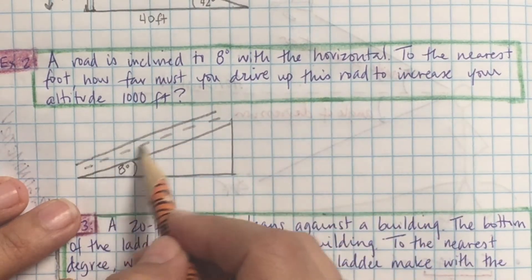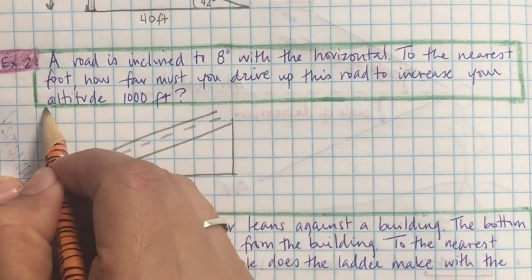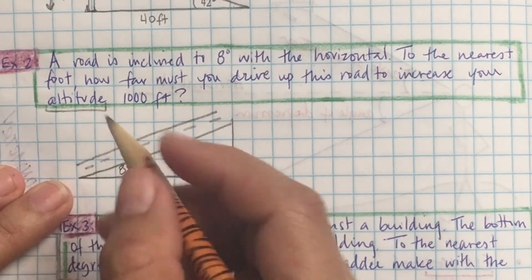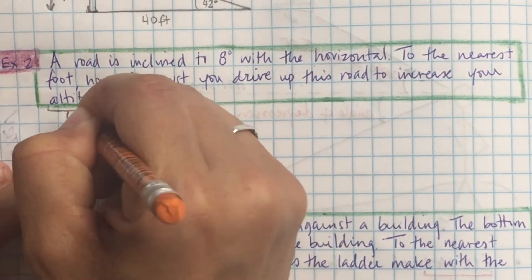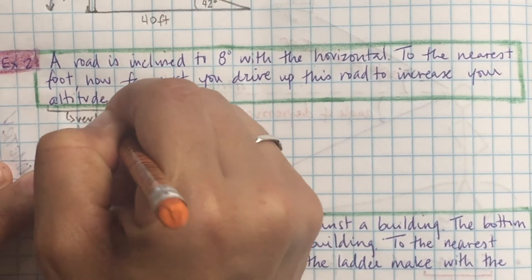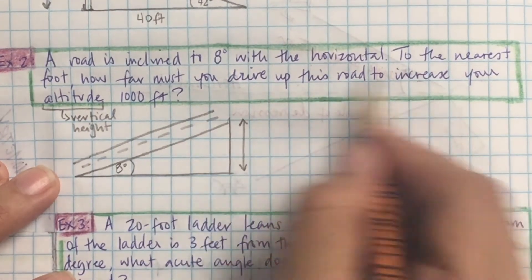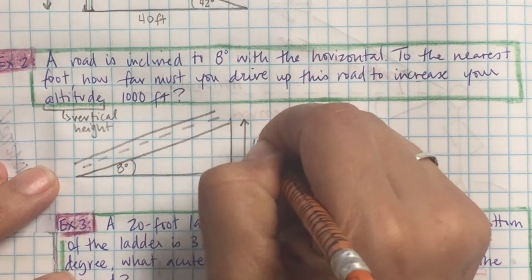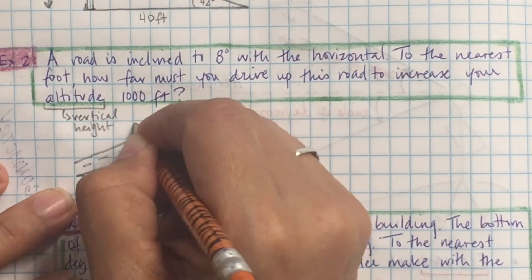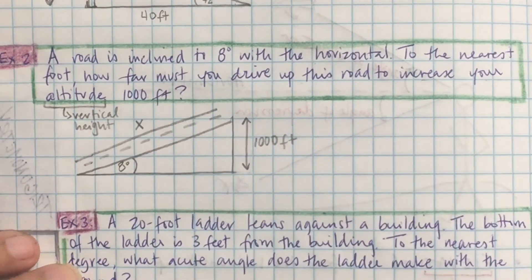How far must you drive up the road to increase your altitude by 1,000 feet? Altitude means your height from the ground — like when you go to the doctor and they take your height. It meets at 90 degrees, so that's the altitude, which is 1,000 feet. How far you drive up the road is X.